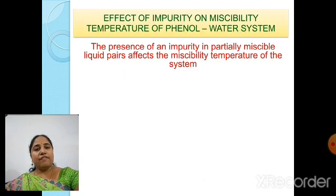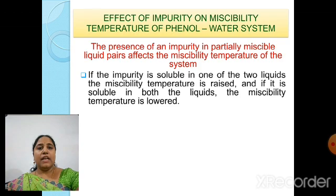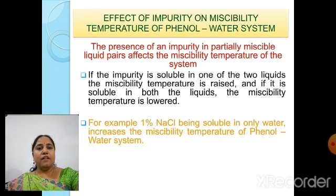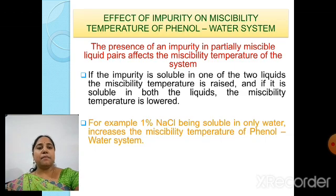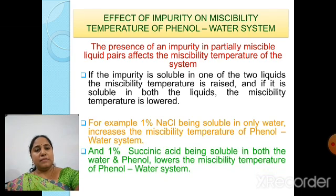Next, let us discuss the effect of impurity on miscibility temperature of the phenol-water system. The presence of an impurity in partially miscible liquid pairs affects the miscibility temperature. If the impurity is soluble in only one of the two liquids, the miscibility temperature is raised. If it is soluble in both liquids, the miscibility temperature is lowered. For example, 1% NaCl, being soluble in only water, increases the miscibility temperature of the phenol-water system. And 1% succinic acid, which is soluble in both water and phenol, lowers the miscibility temperature of the phenol-water system.